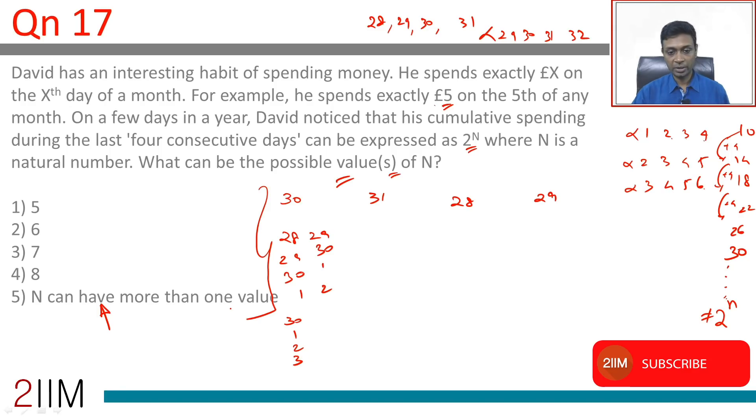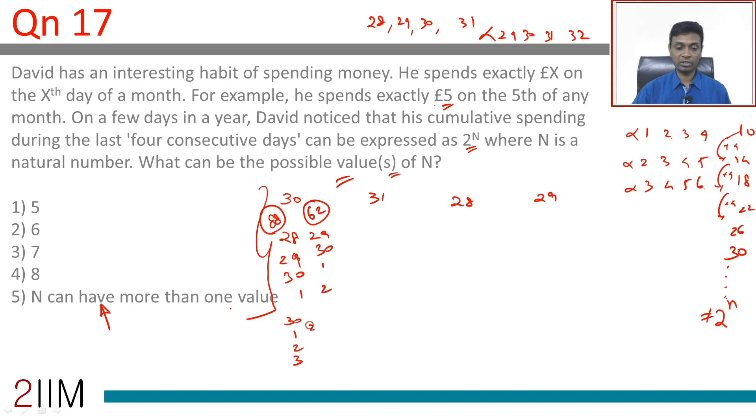28, 29, 30, 1 adds up to 88—this doesn't work. 29, 30, 1, 2 doesn't work. 30, 1, 2, 3 adds up to 36—doesn't work. The 30-day thing didn't work. I can sense 29, 30, 31, 1 will work because we're close with 62.